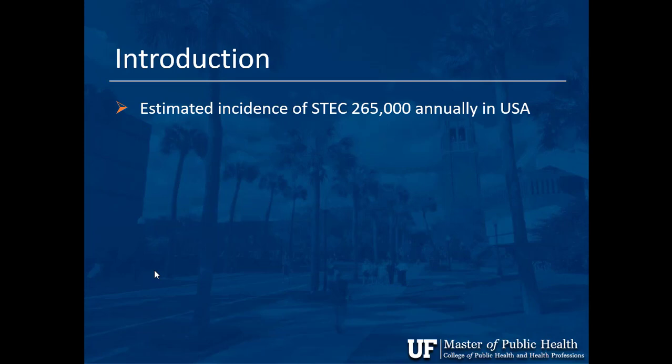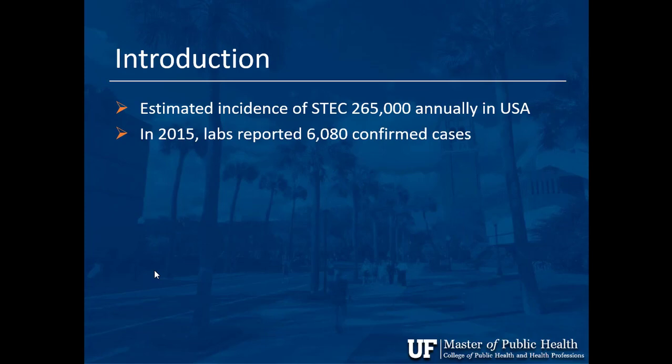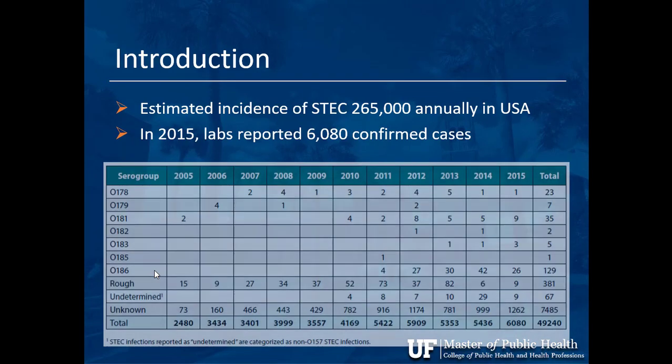It's estimated by the CDC that this Shiga Toxin-producing E. coli infects about a quarter million people per year. But when we test, for example in 2015, we only get confirmed cases somewhere around 6,000 or even less. The reason is most people just have diarrhea and don't go to the hospital, so many cases go unreported.